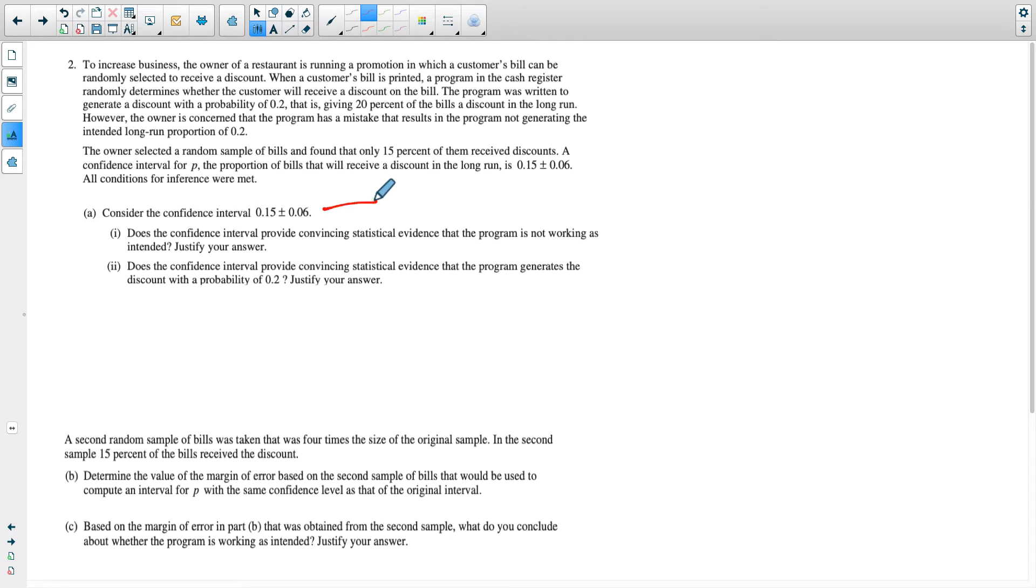I'm going to rewrite the interval using regular numbers here. That's going to go from 15% plus or minus 6%. If I subtract 6%, I get 9, and if I add it, I get 21. So my interval is between 9 and 21% based on the sample that the owner took.